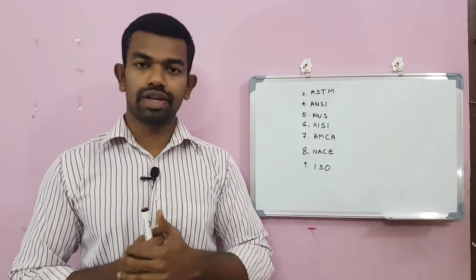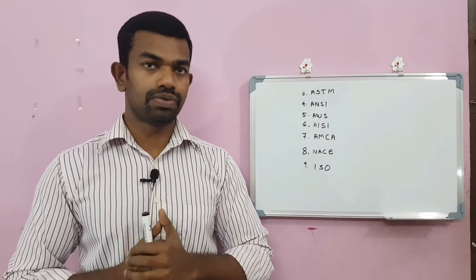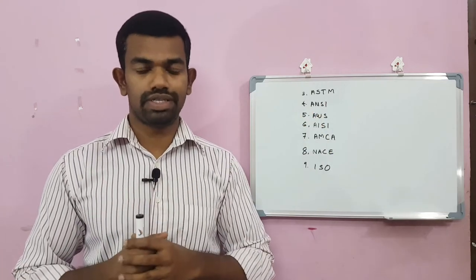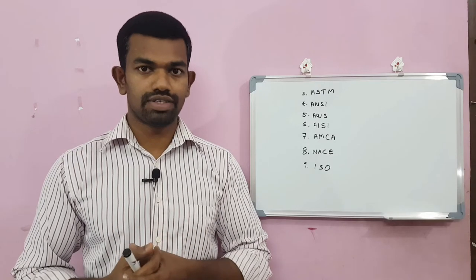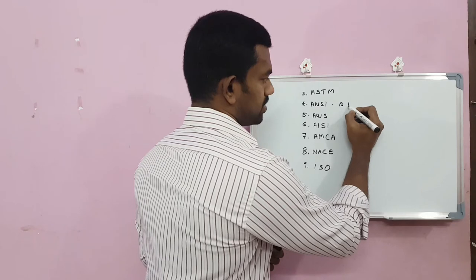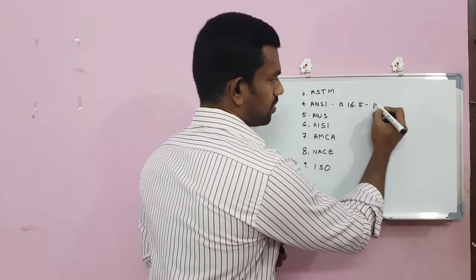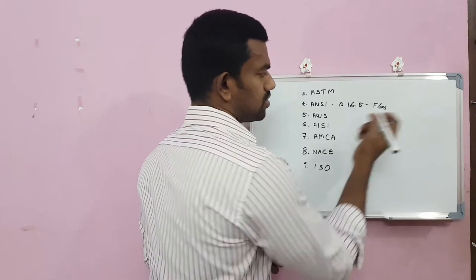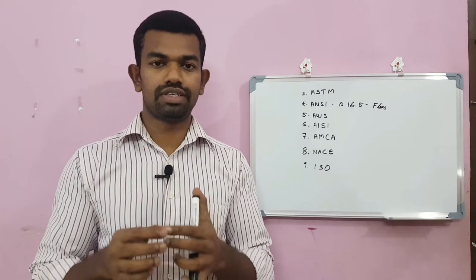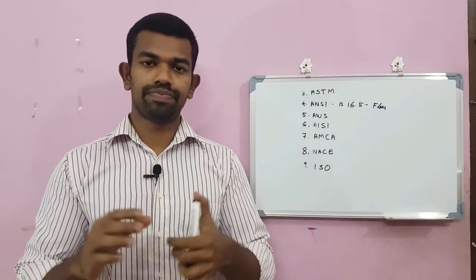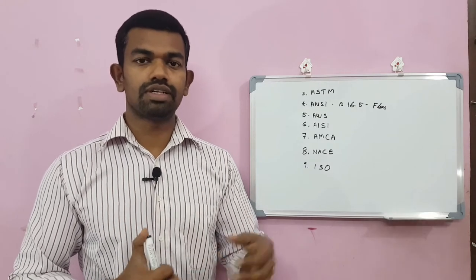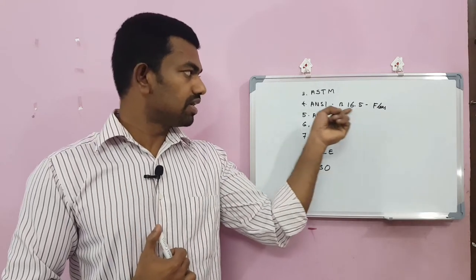ANSI — American National Standards Institute — covers the dimensions of materials. For example, ANSI B16.5 is for flanges — specifying flange dimensions such as hole dimensions, thickness, and bore size.